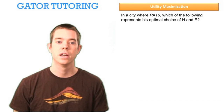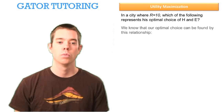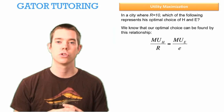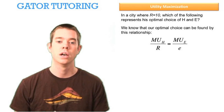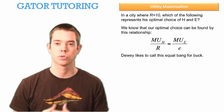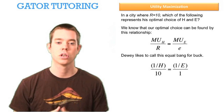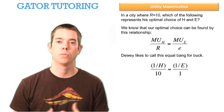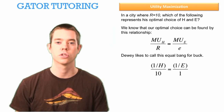The next question says, in a city where R equals 10, which of the following represents his optimal choice of H and E? We know that our optimal choice can be found by the equal bang for buck relationship: the marginal utility of housing divided by the cost of housing R equals the marginal utility of everything else divided by the cost of everything else, little e. We know MU of housing is 1/H, R is 10, MU of everything else is 1/E, and little e, the cost of everything else, is $1 per unit.